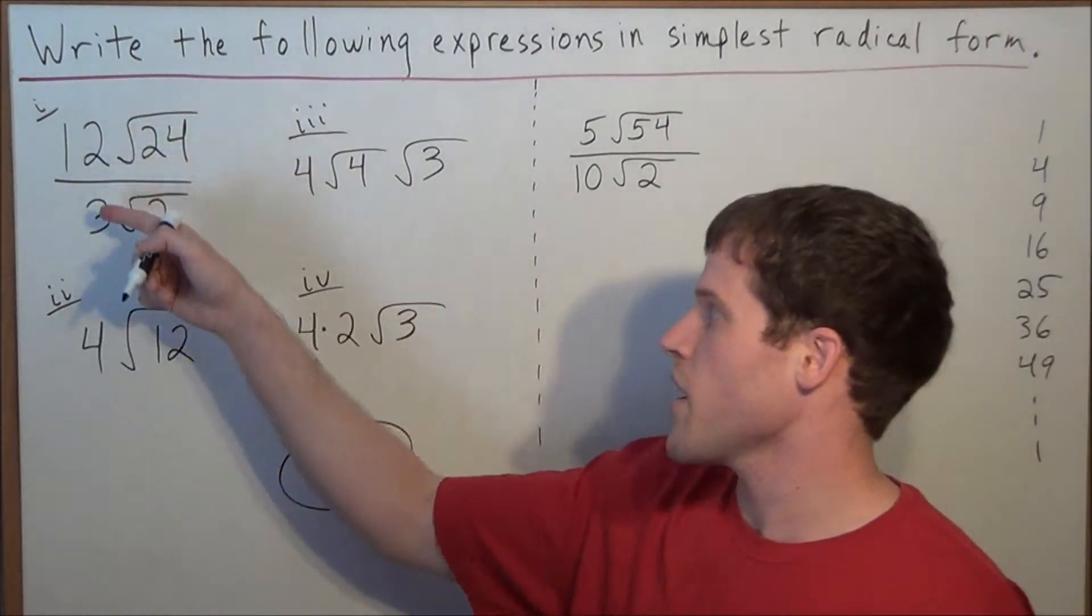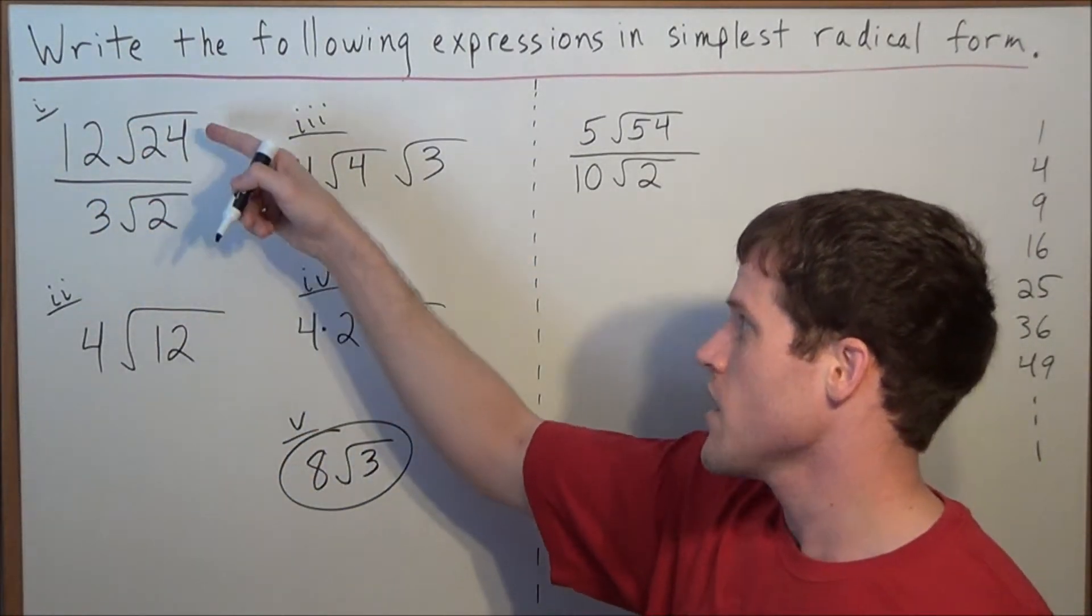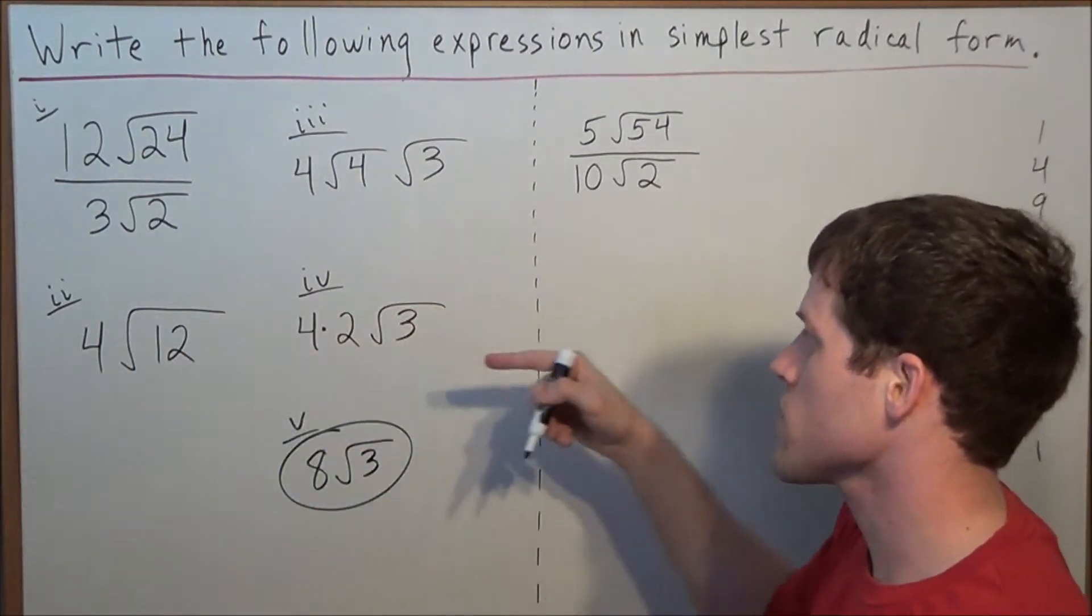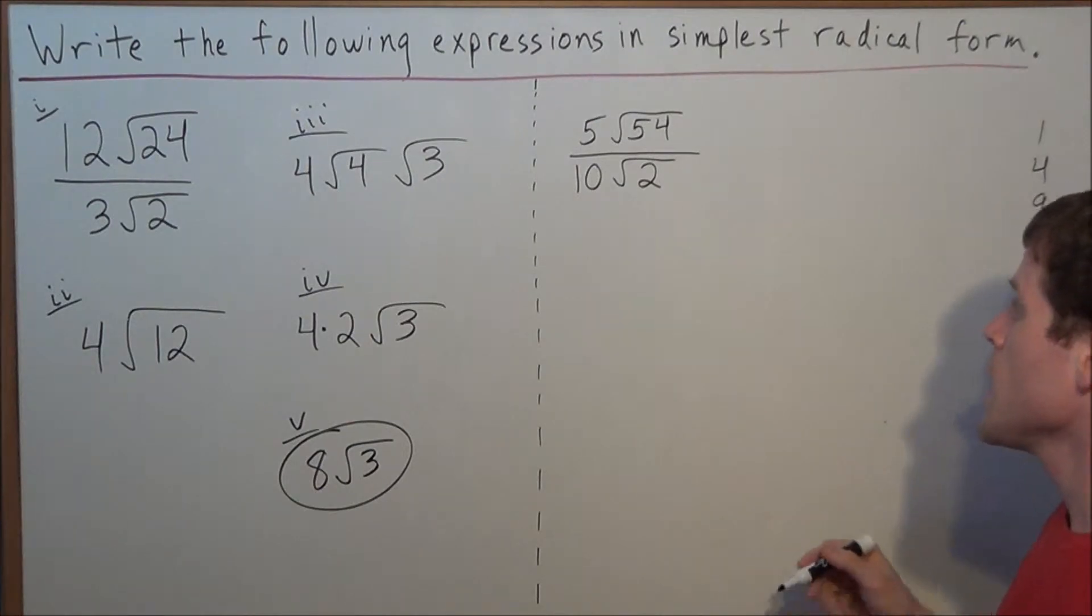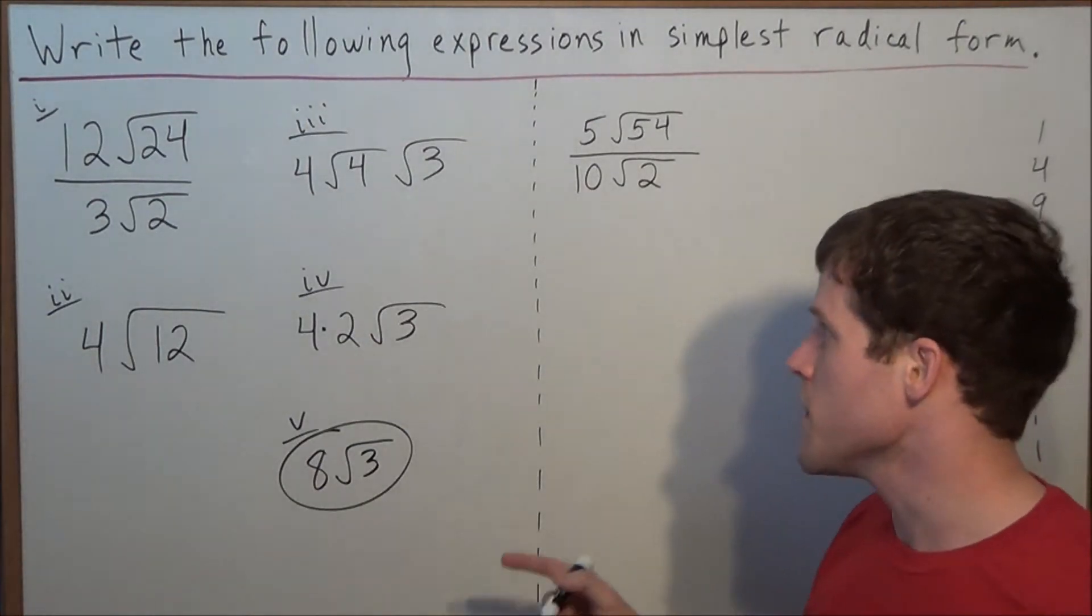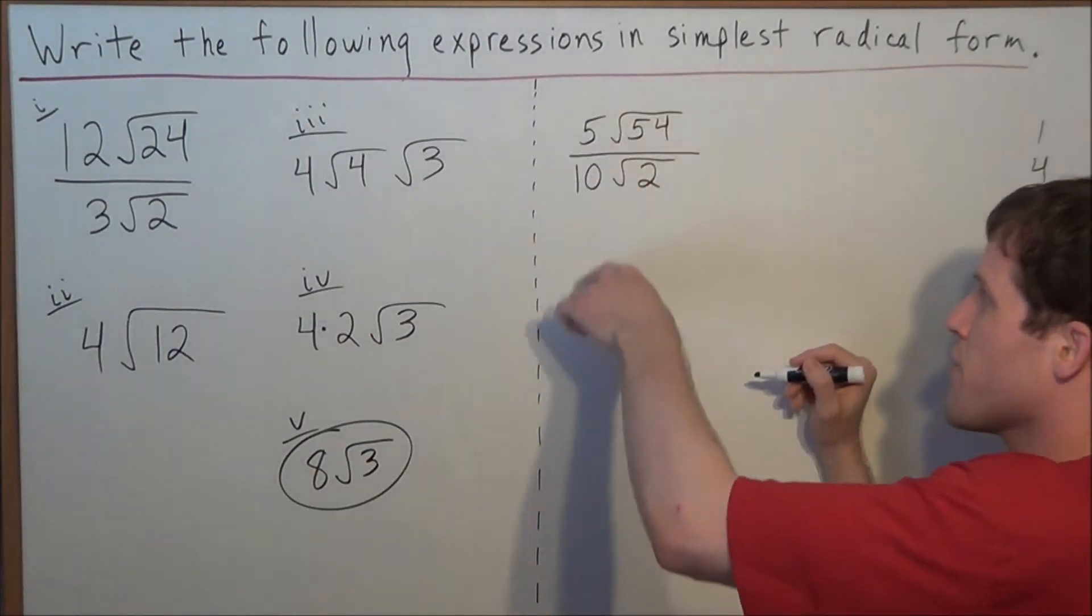So remember, the goal is we divide the numbers outside the radicals, and we divide the numbers inside the radicals, and then it just goes back to simplifying radicals. And for the first example, we have 8 radical 3. Now for the second example, this is a little bit trickier. But think of this, 5 divided by 10, this simplifies to 1 half.